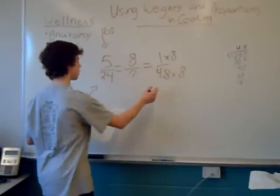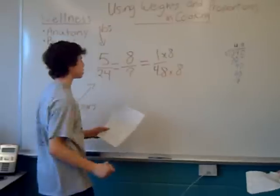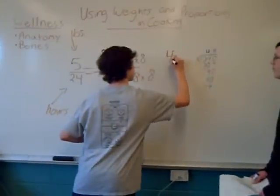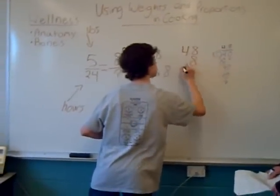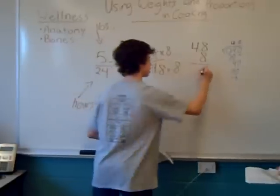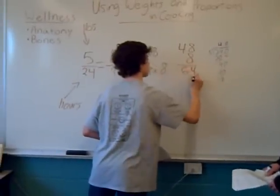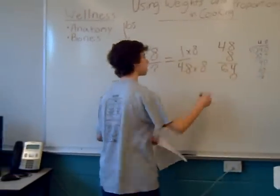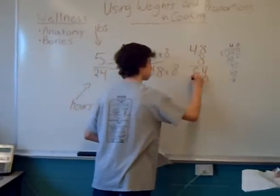Now we need to figure out how many hours. 4.8 hours times 8. 8 times 8 equals 64. On the next line we need to add a zero. 8 times 4 equals 32.